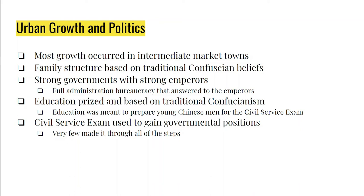The civil service exam worked as follows: a candidate was screened at a local office, then allowed to take a county exam. If they passed, they became a member of the gentry — given some power, fame, and land, but not a full-fledged lord. They were then given the provincial exam, offered only once every three years. If they passed that, they took the metropolitan exam, also given just once every three years. When all was said and done, fewer than 90 people passed the full cycle and earned a government position — making it an extremely prestigious achievement.